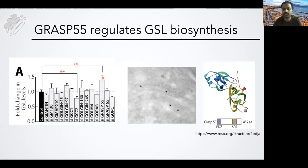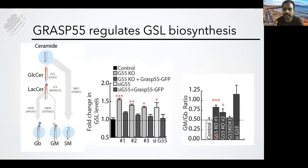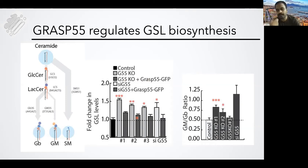GRASP55 is a molecule localized in the middle of the Golgi, called the medial Golgi. It is a well-studied molecule with two PDZ binding domains in the N-terminus, followed by a serine-proline-rich (SPR) domain in the C-terminus. To understand how GRASP55 does it, we made CRISPR-Cas9 knockout cell lines — three independent clones. All three clones showed increased production of glycosphingolipids, and when you overexpress GRASP55 in these clones, the production of glycosphingolipids was reduced, confirming the effect is specific to the absence of GRASP55. In at least two of these clones, GM-GB ratio also changed — more gangliosides than globosides.